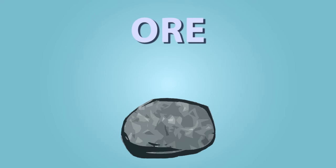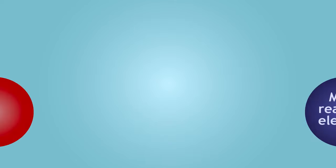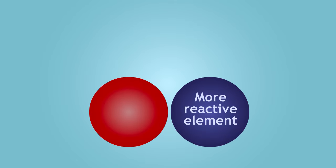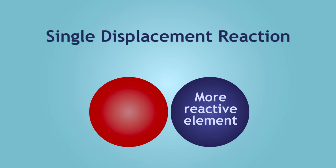In summary, an ore is a rock that contains a high percentage of a certain type of mineral, which can exist as an oxide, sulfide, or carbonate compound. The mineral can be extracted by a single displacement reaction using a more reactive element.